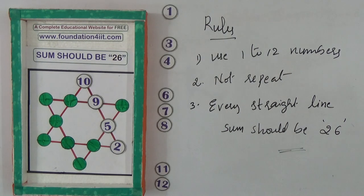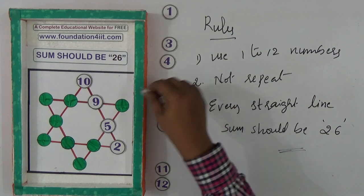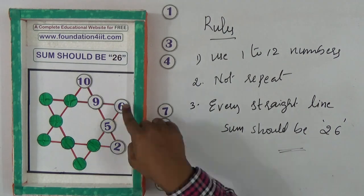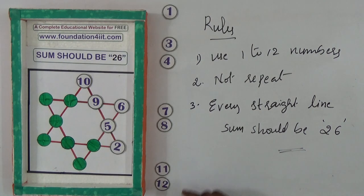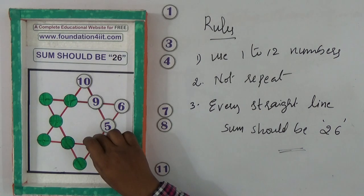2 is here. Now this sum is 26. And 6 plus 5 - this is a line - 6 plus 5 is 11, and I'm taking 12.